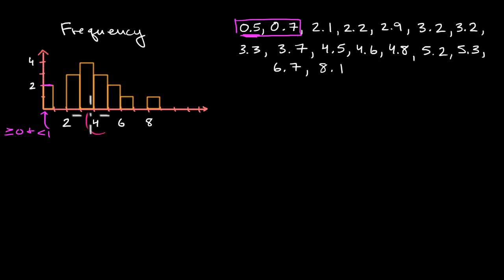This category right over here is greater than or equal to three and less than four. Notice, there are four data points in that category, and on this frequency histogram, the height of the bar is indeed four. So, this is a nice way of looking at a distribution.